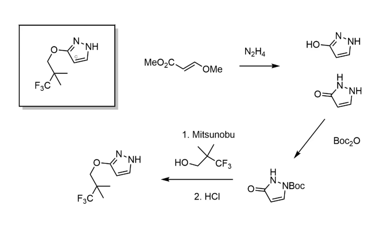Talking about the pyrazole first — when thinking about the synthesis of heterocycles like these, it's beneficial to keep track of oxidation levels. We have the acid oxidation level and an aldehyde oxidation level, because that position bears a proton. The starting molecule is an enol ether of an aldehyde conjugated into a methyl ester, and when treated with hydrazine, a Michael addition occurs first, followed by cyclization onto the ester, giving the product as two tautomeric forms.